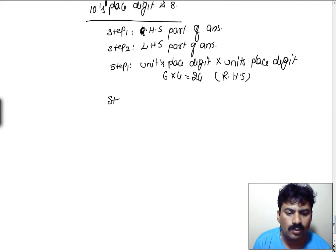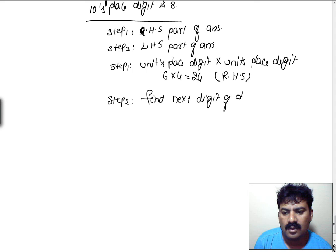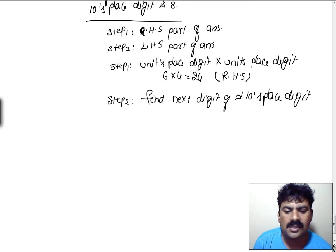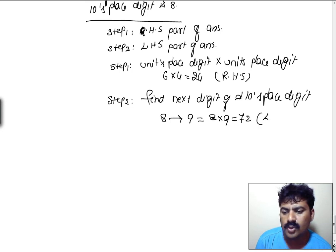In step 2, find the next digit of the tens place digit. In our example, for the 8, the next digit is 9 in the number system. Then do the multiplication of these two: 8 into 9 equals 72, which is going to be the LHS part of the final answer.